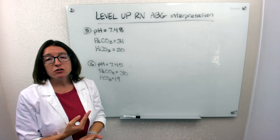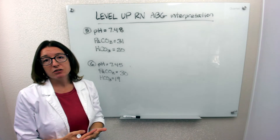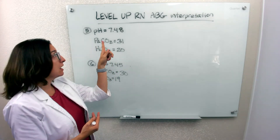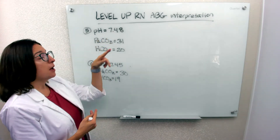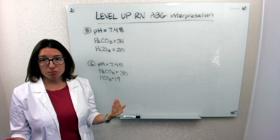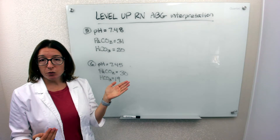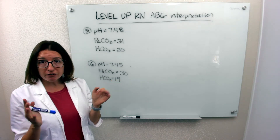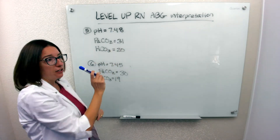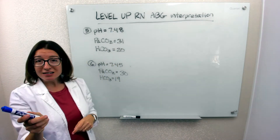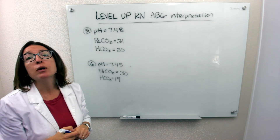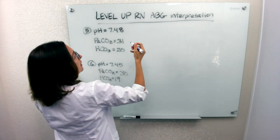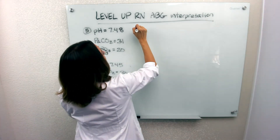First step: do we have acidosis or alkalosis based on the pH? pH should be between 7.35 and 7.45. Because it is out of range on the high side, we know we have alkalosis.